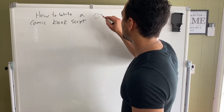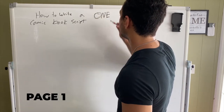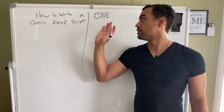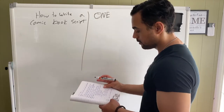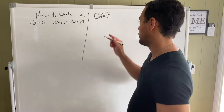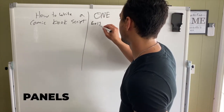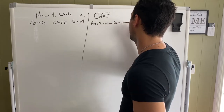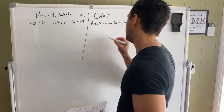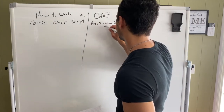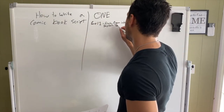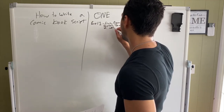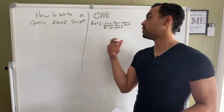At the very top, we're going to have "One." This tells the artist and the letterer that this is the first page — very important. Then we're going to break down the first panel. So we're going to say "Panel one, living room, interior, daytime. Tony in front of whiteboard." Give it a little description so the artist knows what he's drawing.